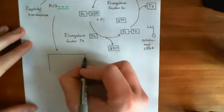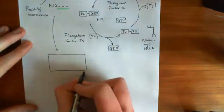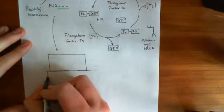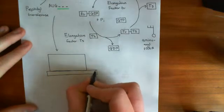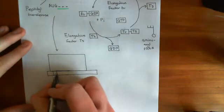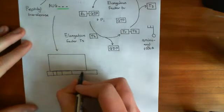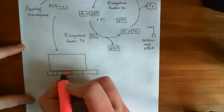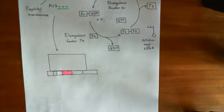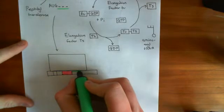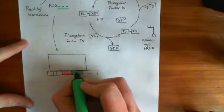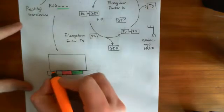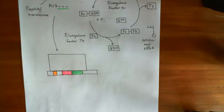Here's the 30S ribosomal subunit and here's the piece of mRNA in the middle. We have the Shine-Dalgarno sequence here, then our first start codon and then our second codon in green. So this is our first start codon, the AUG, and straight after that we had our second codon in green. The Shine-Dalgarno sequence we previously coloured in orange.